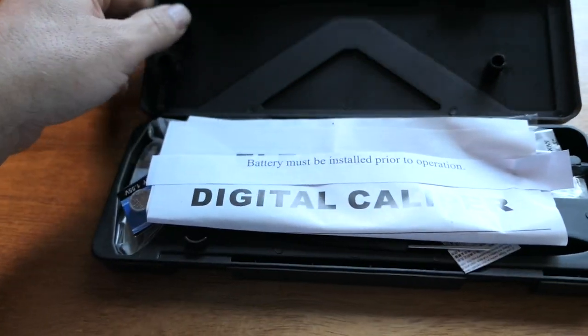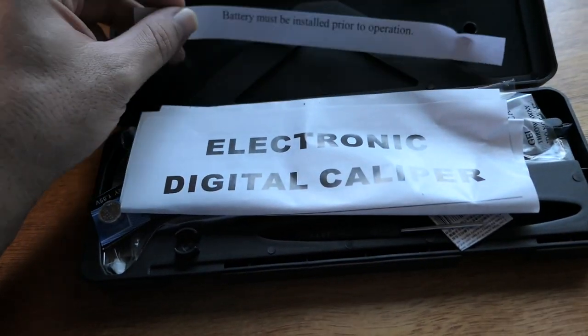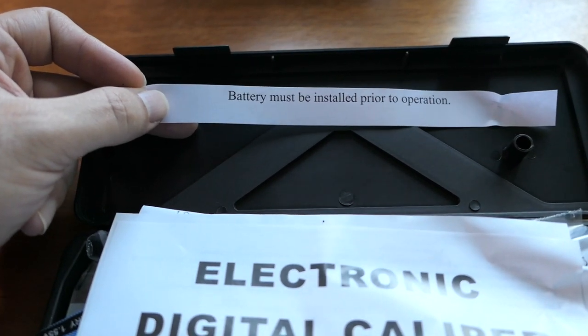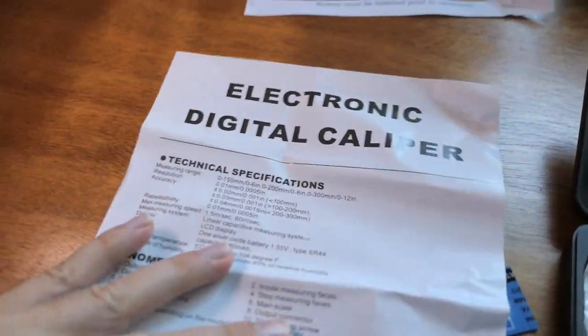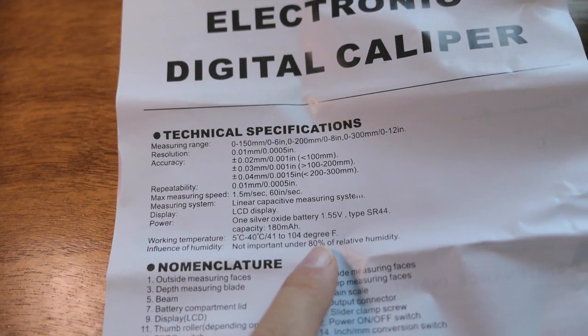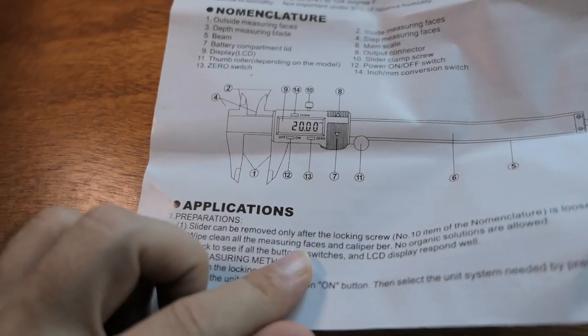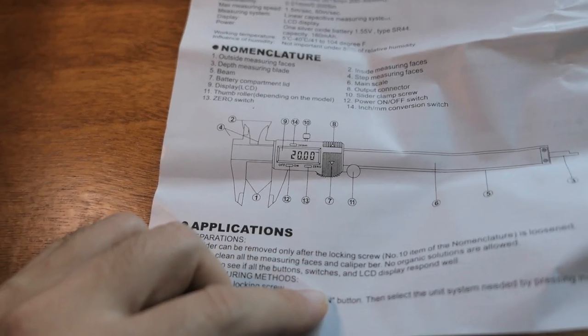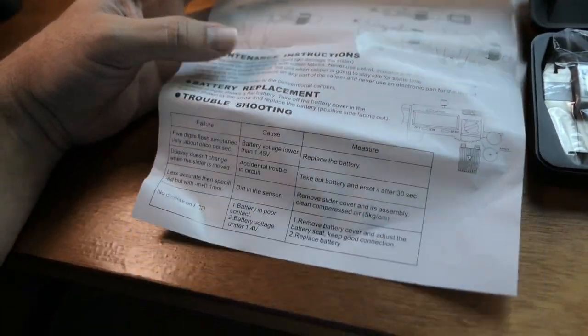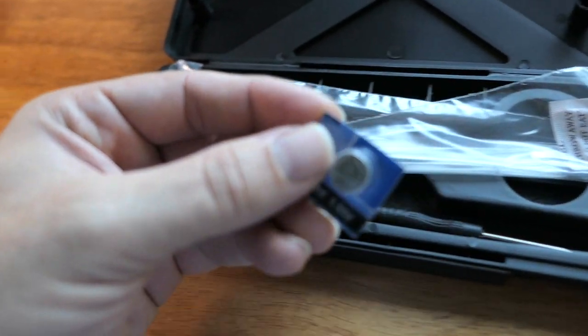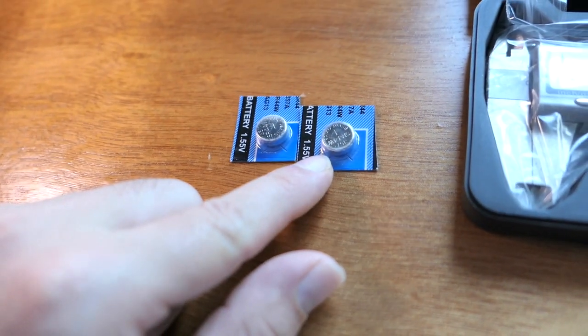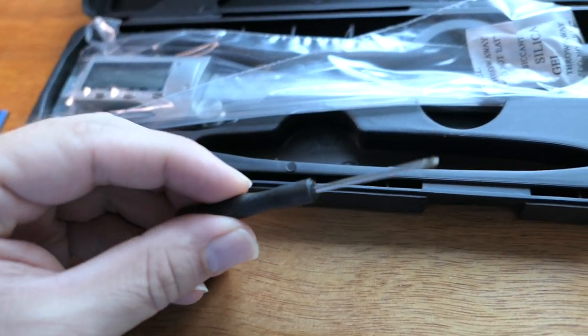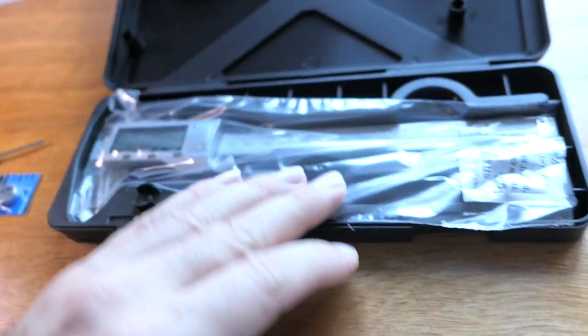All right, so it looks like we've got a bunch of stuff in here. We have a little note here that the battery must be installed prior to operation. Electronic digital caliper. Here is the specifications of how accurate it is and a little diagram here of how to use it and what everything does. So pretty interesting, kind of tells you everything. So I'm pretty bad at reading directions. So we have two batteries guys, that was nice. So we have a battery and an extra battery when that one dies. We have a little Phillips screwdriver that I guess you need to unscrew to put the battery in. And here is the caliper itself.